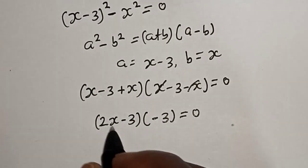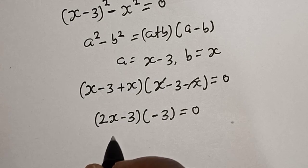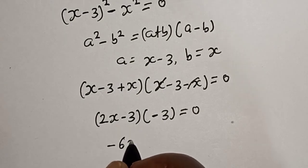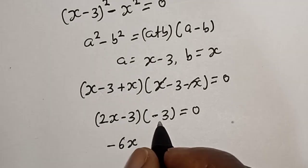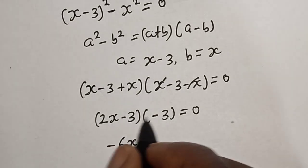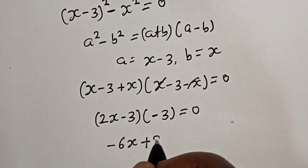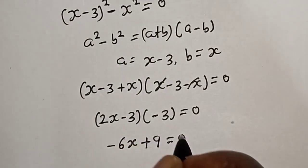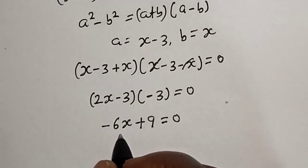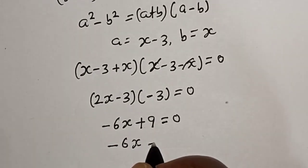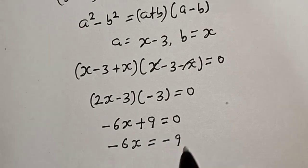Then let's open this bracket. 2x times minus 3, this is minus 6x. Minus 3 times minus 3 plus 9 is equal to 0. Minus 6x is equal to minus 9.